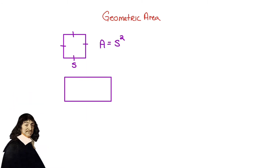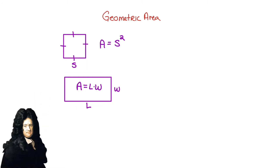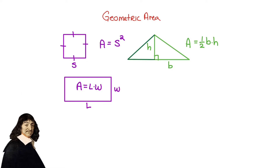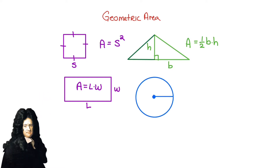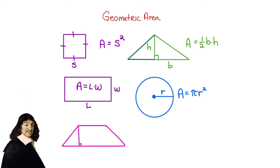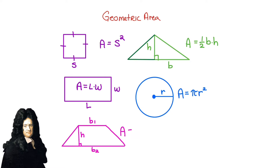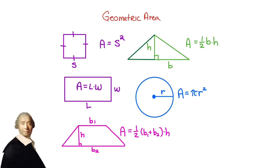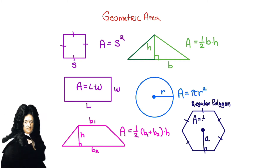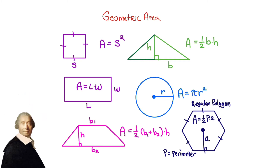Here are a few geometric areas you might be familiar with: the area of a square, the area of a rectangle, the area of a triangle — one-half base times height — a circle, pi r squared, the area of a trapezoid, which is one-half base one plus base two times its height, and for a regular polygon, its area is given by one-half its perimeter times its apothem.